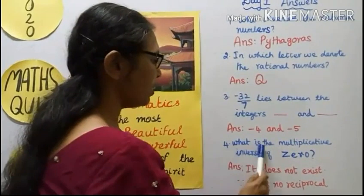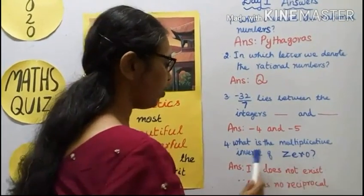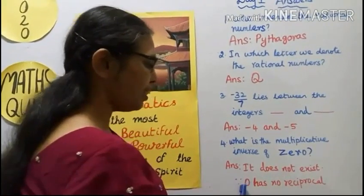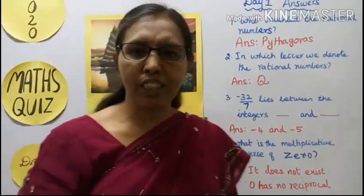Fourth question: What is the multiplicative inverse of zero? Answer: It does not exist since zero has no reciprocal.